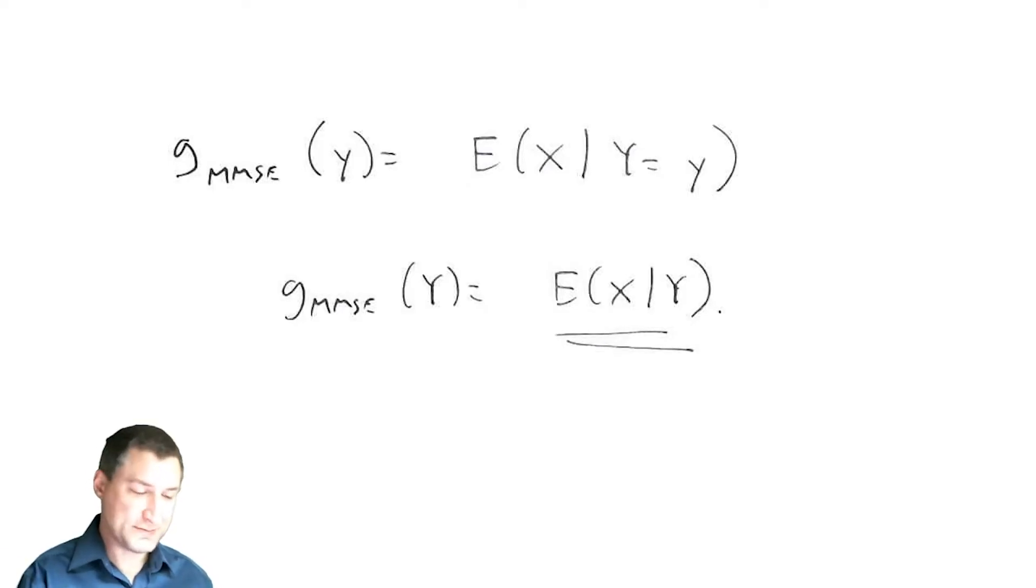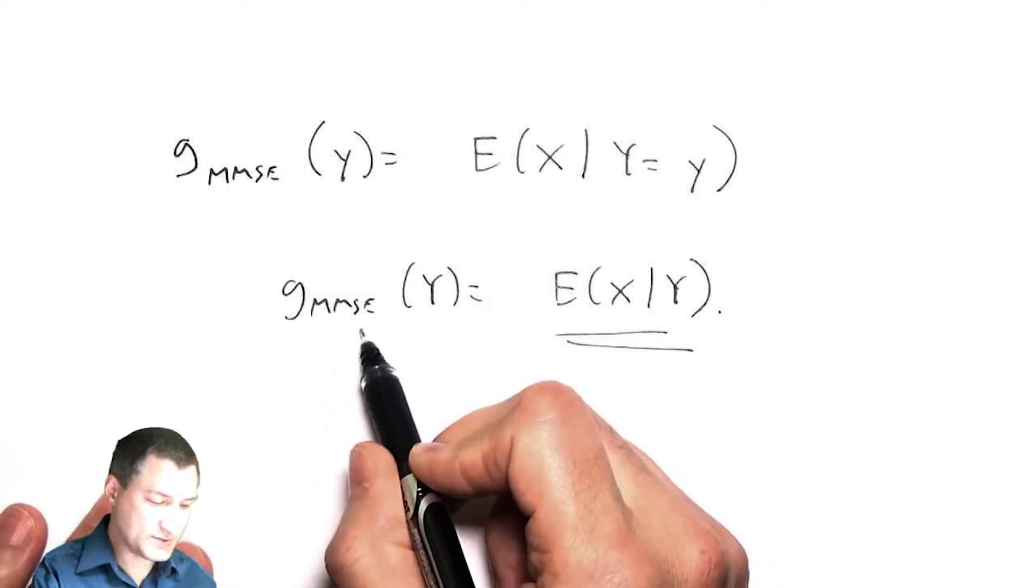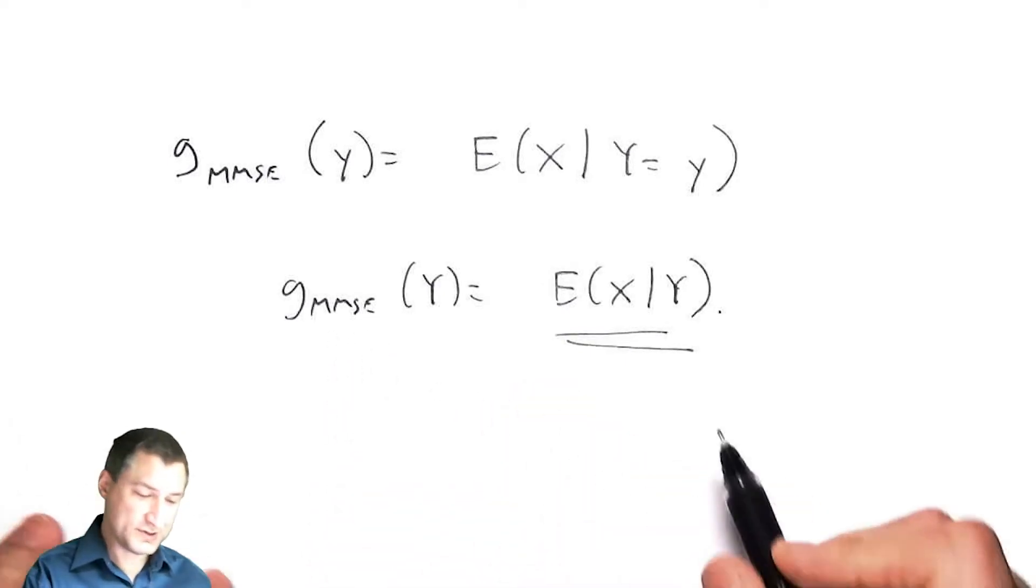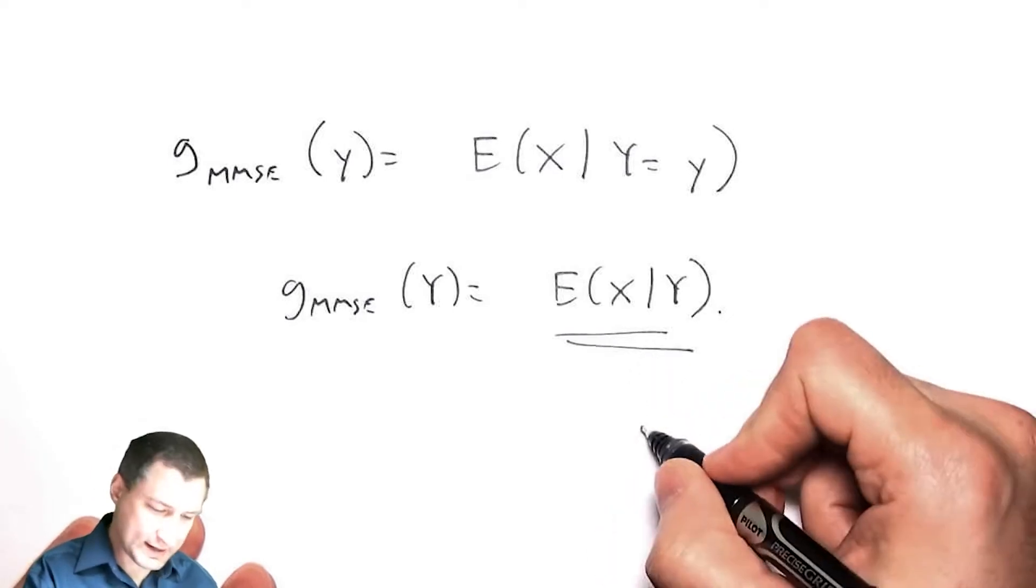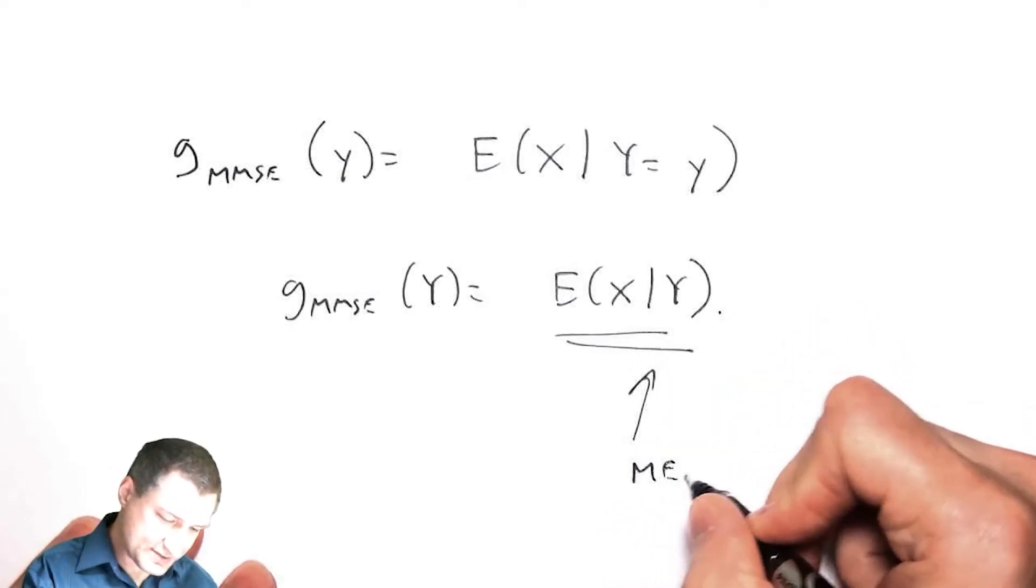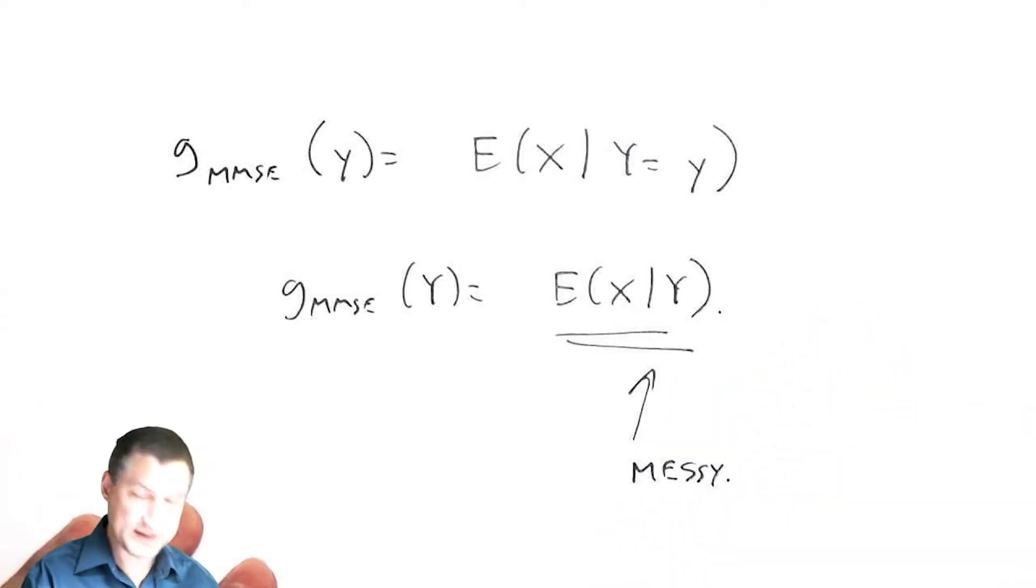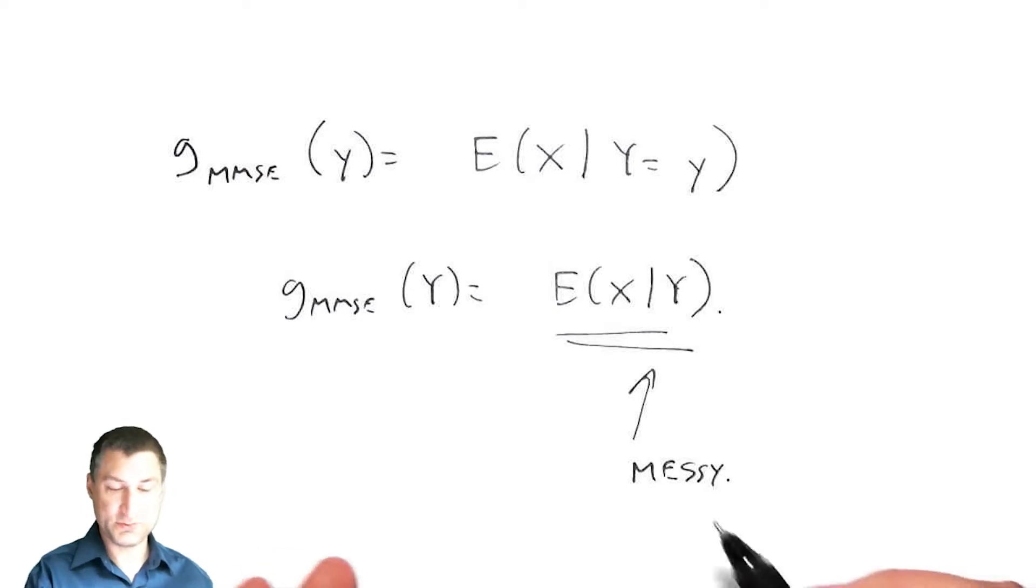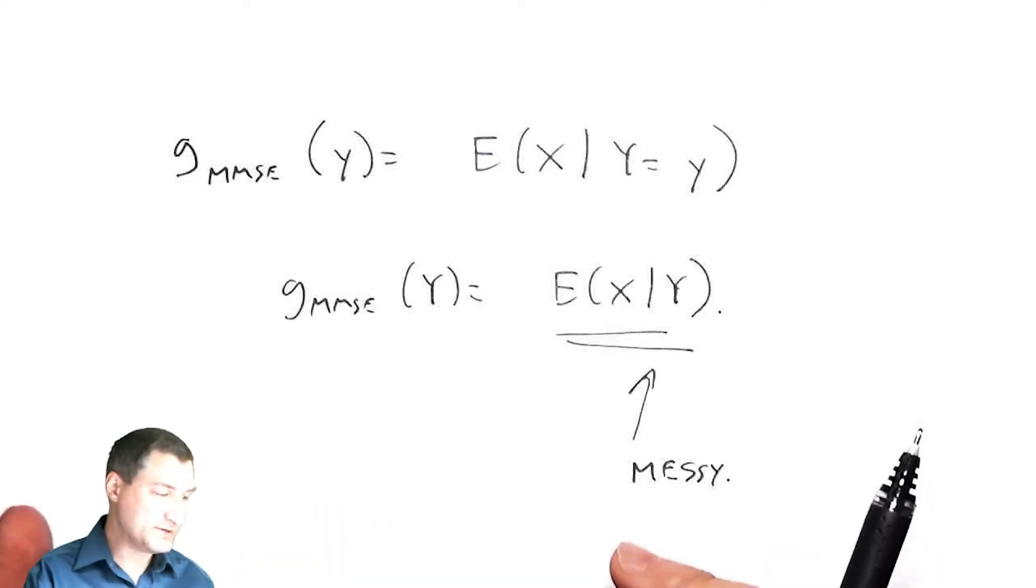Picking up where I left off last time, we ended up with this minimum mean squared error estimator that was the expected value of x given y. The problem is that this is some messy function. I was allowing myself to maximize over all possible functions of y, and this is the one that gives me the best answer.